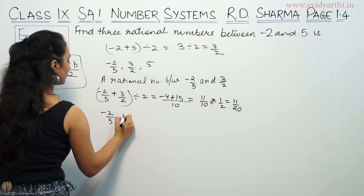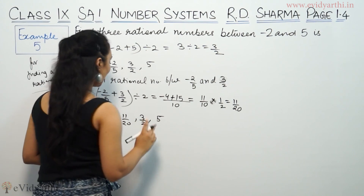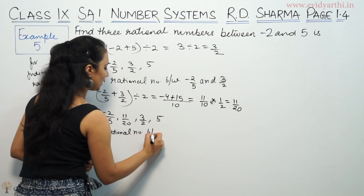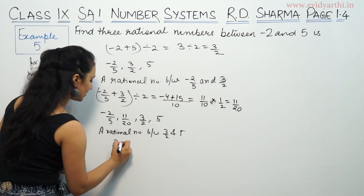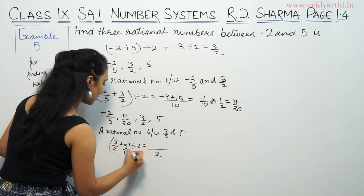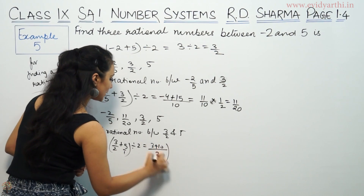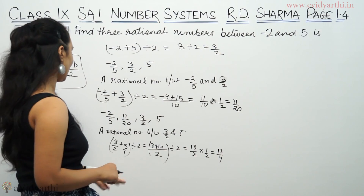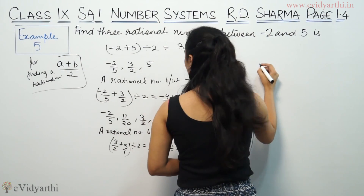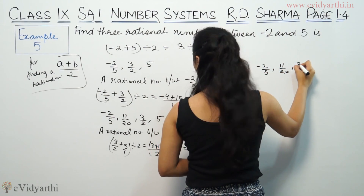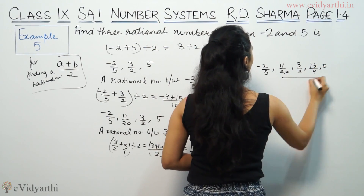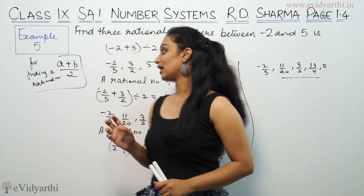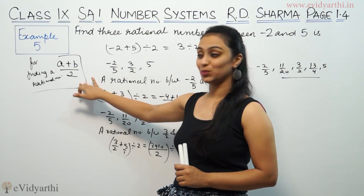So one rational number is minus 2 by 5, then 11 by 20, then 3 by 2. Now we need to find a third rational number between 3 by 2 and 5. Using the formula: 3 by 2 plus 5 divided by 2 — the LCM gives 3 plus 10 which is 13 by 2, then multiplied by 1 by 2 equals 13 by 4. So the 3 rational numbers between minus 2 by 5 and 5 are 11 by 20, 3 by 2, and 13 by 4. To find a rational number between two numbers, just add them and divide by 2, that means A plus B by 2.